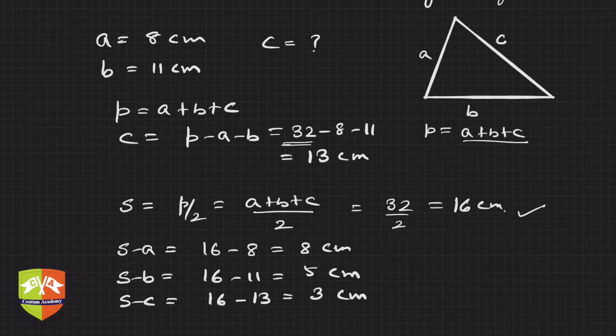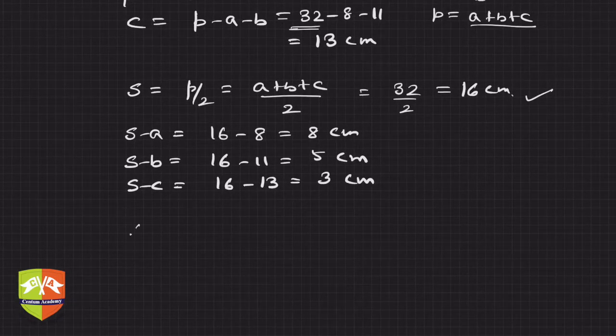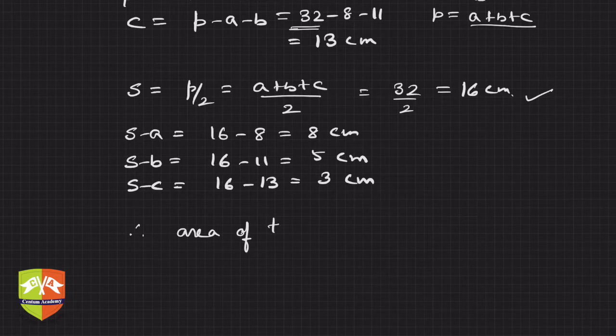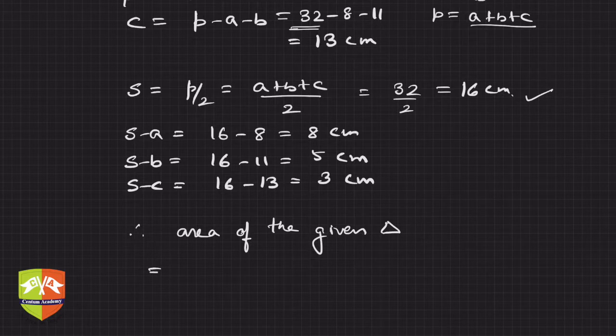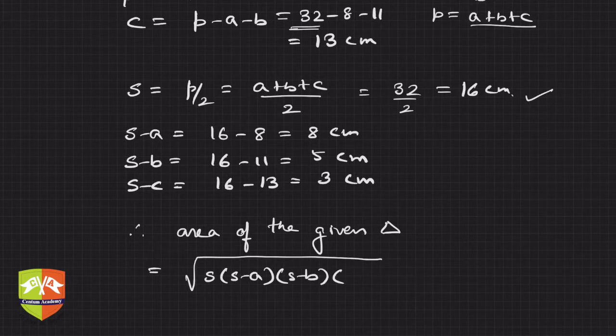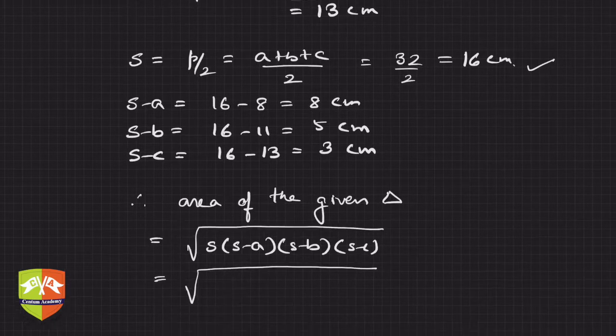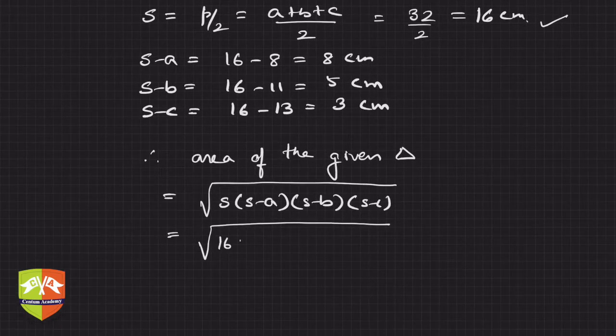So 8, 5, and 3 are the three values. Hence the area of the given triangle will be equal to under root - write the formula - s times s minus a times s minus b times s minus c, which equals under root 16 into 8 into 5 into 3.